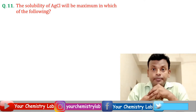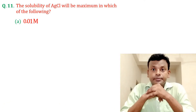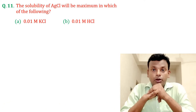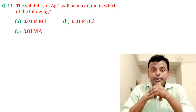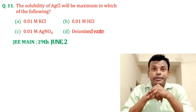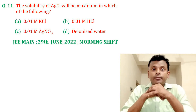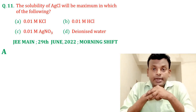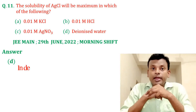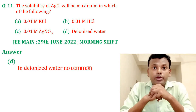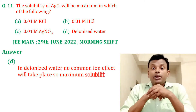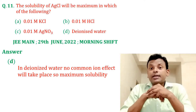Question eleven: the solubility of AgCl will be maximum in which of the following options — A, B, C, or D? This question was set in JEE Main 29th June 2022 morning shift. Answer is option D: in deionized water, no common ion effect will take place, so maximum solubility occurs. Option D is the correct answer.